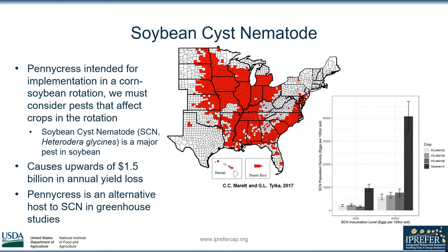One of the main goals with pennycress is to implement it into a corn-soybean rotation. In order for that to be successful, we have to consider other pests that affect crops in that rotation. For this project we looked into soybean cyst nematode, which is a major pest in soybean that causes around one and a half billion dollars in yield losses annually. In greenhouse studies we have found that pennycress is an alternative host to soybean cyst nematode, so it is imperative we know how strongly pennycress attracts the pest. Population density for soybean cyst nematode in pennycress is about 20 percent of what is seen on susceptible soybean varieties.